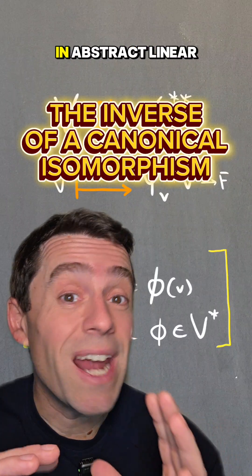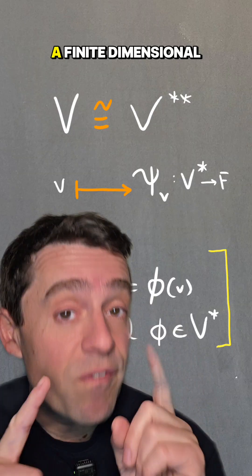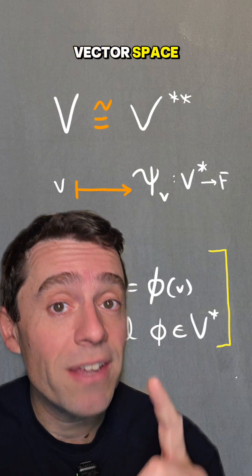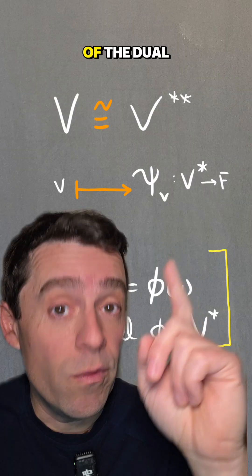There is this beautiful result in abstract linear algebra that says a finite dimensional vector space is canonically isomorphic to the dual of the dual.